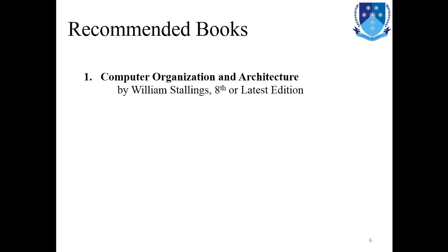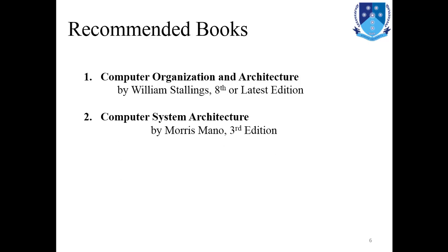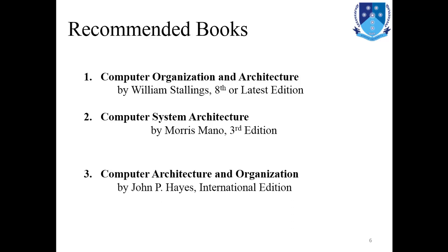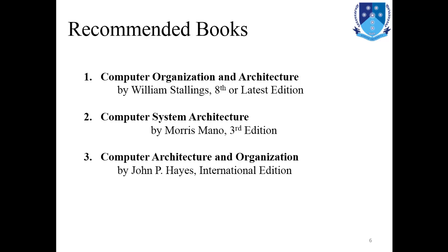Recommended books for this course include 'Computer Organization and Architecture' authored by William Stallings, eighth edition — any later edition is also acceptable. The majority of this lecture's contents are taken from this book. Two other books are also used: 'Computer System Architecture' authored by Morris Mano, and 'Computer Architecture and Organization' authored by John P. Hayes.